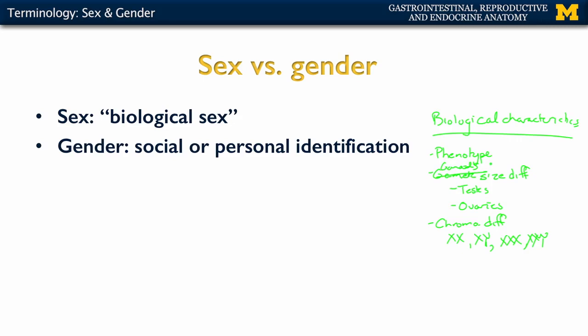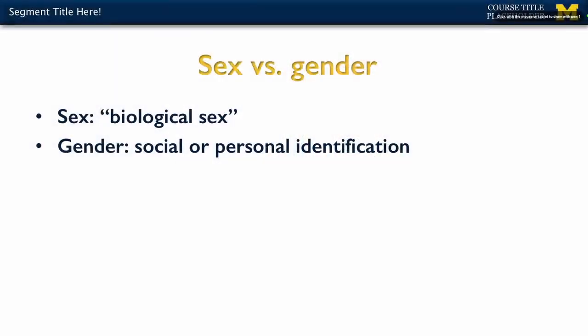Now while biological characteristics may lead to a gender identification, it certainly is not always the case. When we're talking about gender, it's really split into who is going to give this gender identification. First, we're going to have what's referred to as a societal identification. A lot of times that is based on behaviors of the individual — roles that are often typically thought of as more masculine or more feminine — and obviously physical characteristics are going to play a role as well.